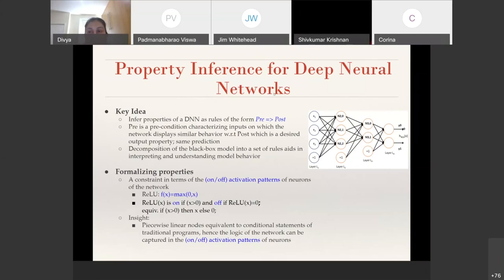The properties that we extract are expressed as constraints in terms of the on-off activation patterns of the neurons of the network. For instance, for the rectified linear unit or the ReLU activation function, it is said to be on if the output of the node is greater than zero and off if it is zero. The key insight we had is that for piecewise linear activation functions such as ReLUs, they can be considered equivalent to conditional statements of traditional software programs, and hence adopting a programmatic view of the DNN model, the logic of the network can be captured in the on-off activation patterns of the neurons.